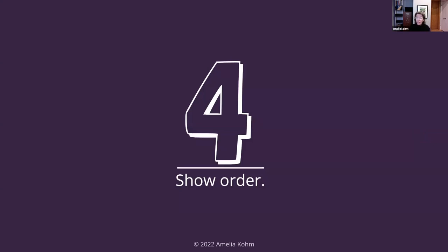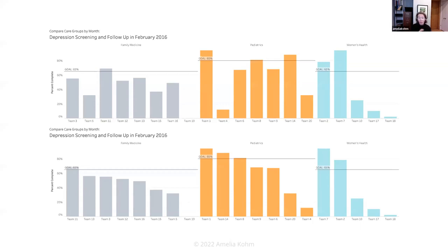Another suggestion is to show order when it exists in your data visualization. Ordered data should be shown in a way that our perceptual system intrinsically senses as ordered, and conversely, unordered data should not imply an ordering that doesn't exist. Here's health center data where each bar shows the percentage of health visits that included depression screening across different care teams. The bars on top are not ordered; the bars on the bottom are in descending order. Ordering them creates a lower cognitive load — we can easily see which care teams are meeting or exceeding goals and which are falling below.